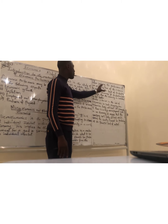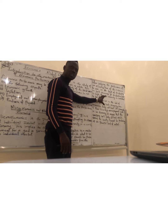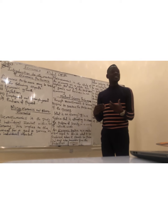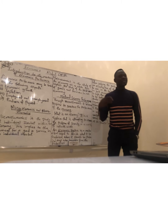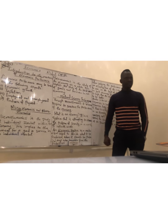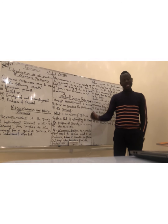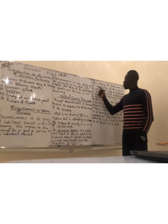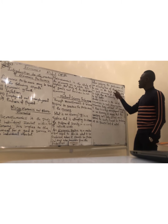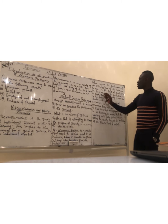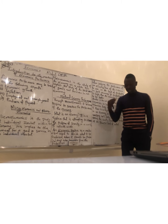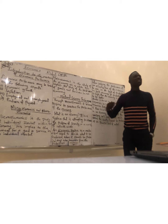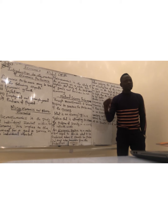When judging the performance of an economy, one of the criteria to use is the level of production. You judge the performance of an economy based on what is being produced in that economy. If the production level is high, then the economy is considered to be better. For example, some five years ago, the number of barrels of crude oil coming out of Libya was much less than now — now they go to over 1 million barrels per day, compared to maybe 300,000 barrels per day before.